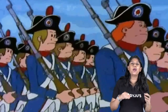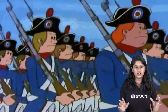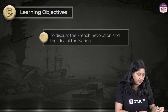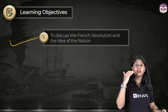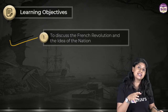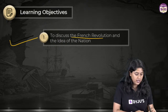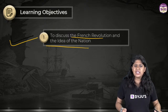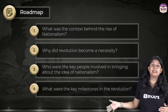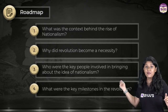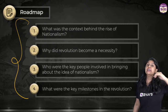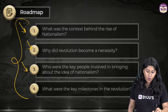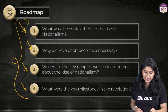Welcome to class 10. Now let's talk about the first thing we will be learning in today's class. We are going from the textbook, which has six subdivisions. In today's class we are focusing on the French Revolution and the idea of the nation. Our agenda is clear: we will discuss what is the meaning of nationalism, why the French Revolution took place, who were the key people involved, and the key milestones.